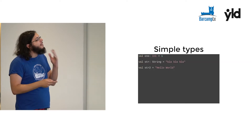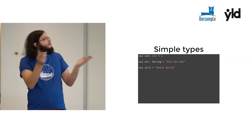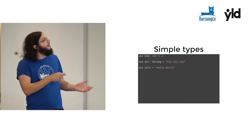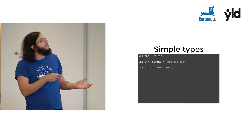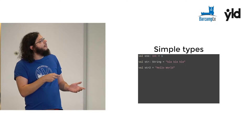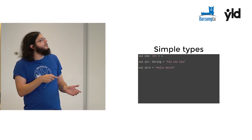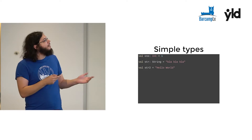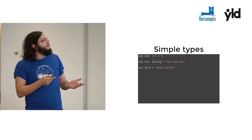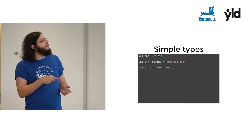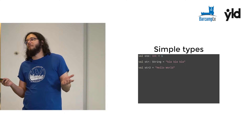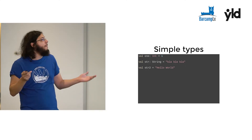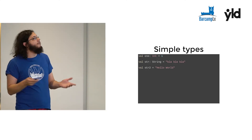Now that I've given you the motivation, let me show you what can be done with types. There are simple types that everybody knows: val1 is an int and you can assign 1 to it; valstr is a string and you can assign a string to it. Some people don't like the boilerplate of writing types, but some languages already infer them for you so you don't need to write the type — the compiler will figure it out.